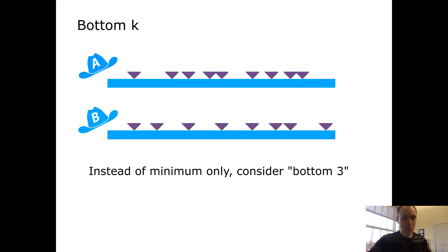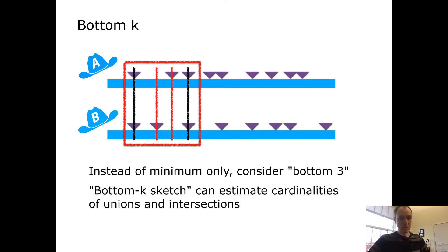One strategy for this would be, instead of taking just the minimum, we can take the bottom three. We can take the minimum, the second minimum, and the third minimum shown inside this red box. We'll find two instances where those items are in the intersection, black bars, and then two instances where those items are not in the intersection, red bars. From that, we can estimate things like union and intersection cardinality, or even the Jaccard coefficient. This is called a bottom-k sketch, with k being a parameter that we can adjust. The higher we make k, the larger our sketch, but it gives us more opportunities to find the coincidences or non-coincidences that we're going to sum up to form our cardinality estimates.